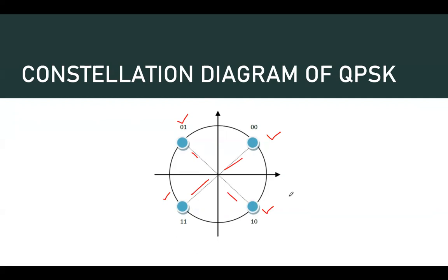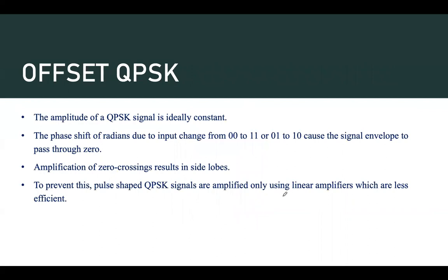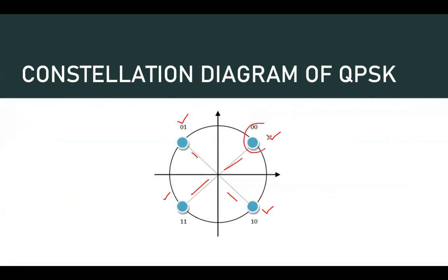There is a problem in case of QPSK. Whenever there is an input change from 00 to 11 — that is when both bits change — for example, 0 changes from 0 to 1 and the next 0 also changes from 0 to 1, the signal envelope passes through zero. Similarly, when 01 changes to 10, there is again a two-bit change and the signal envelope passes through zero.